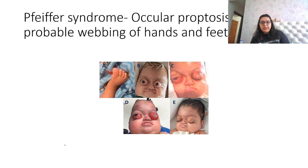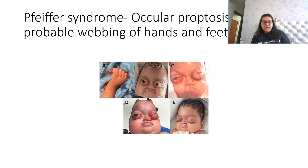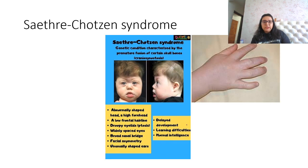Looking at Pfeiffer syndrome images: there is significant ocular proptosis — more extensive than in Crouzon or Apert syndrome — along with webbing of the hands and feet, a very classical and typical picture.